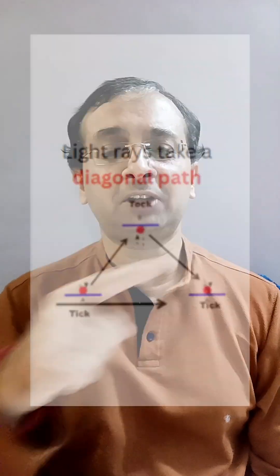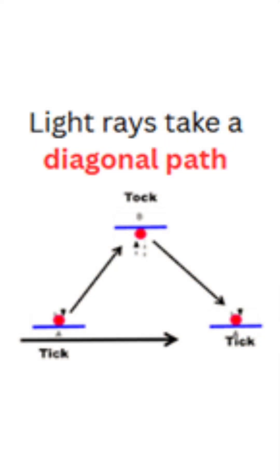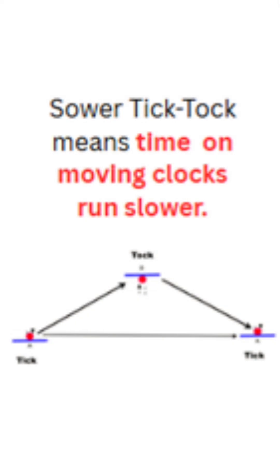If you take that light clock and move faster, the light path that was going straight up and down will start moving in a diagonal manner. As speed increases further, the tick happens at one point and the tock happens much later. If you move close to the speed of light, this diagonal line shows that there is a time dilation.